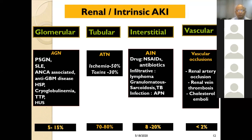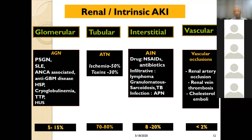In the interstitial cause, with increasing use of analgesics and antibiotics, acute interstitial nephritis is also common. Patients on long-term NSAIDs must be considered. There may also be infiltrative diseases like lymphoma, sarcoidosis, and tuberculosis. For vascular causes — renal arterial stenosis, renal vein thrombosis, and cholesterol emboli — the latter accounts for less than 2%.